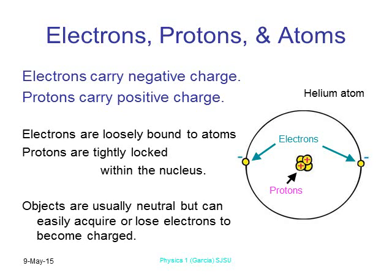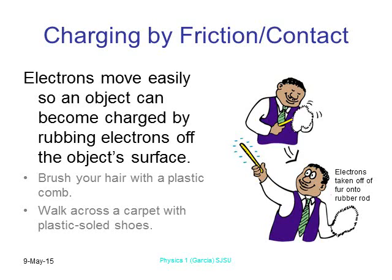Usually when we look at any substance it has a neutral charge, meaning it has the same number of protons as electrons. But those electrons can shift and move around — we can induce charges and move them. Classically, when you brush your hair with a plastic comb, you're actually charging the comb. When you walk across the carpet in socks you can go around shocking people — those are just free electrons rubbed off other surfaces.